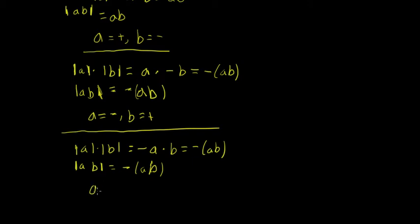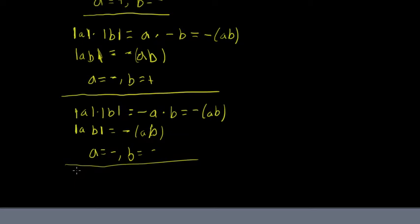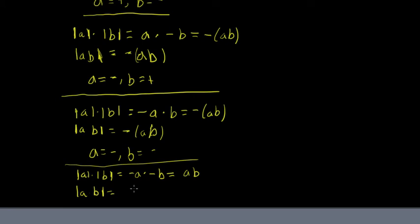Our final case is when both A and B are negative. The absolute value of A times the absolute value of B — the absolute value of A is negative A, and the absolute value of B is negative B. Negative A times negative B is just AB. For the left side, the absolute value of AB — a negative times a negative is a positive, and the absolute value of a positive number is just that number itself, so we also get AB. The statement holds when both A and B are negative.